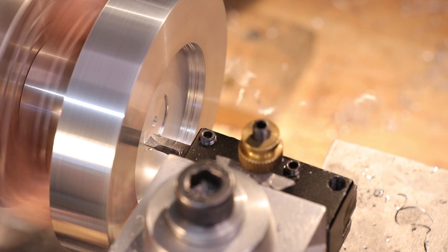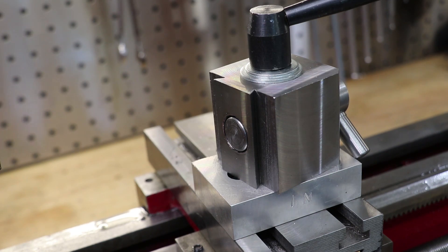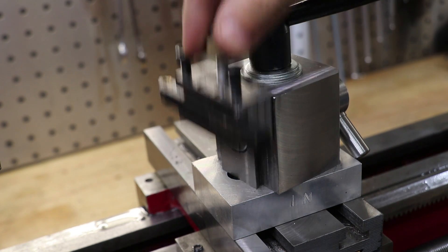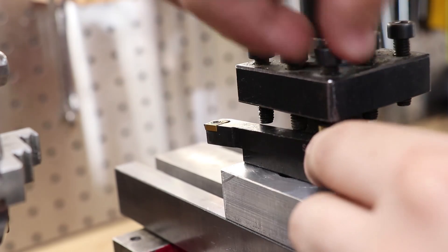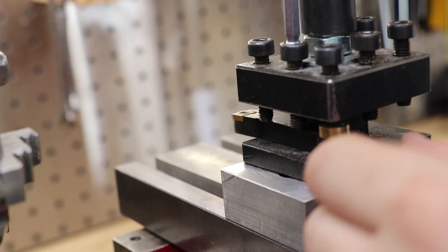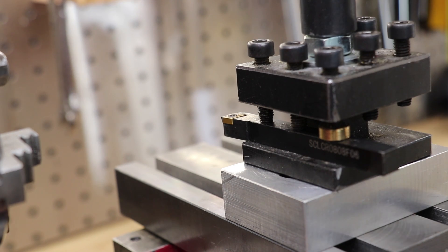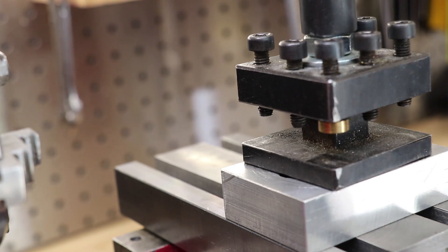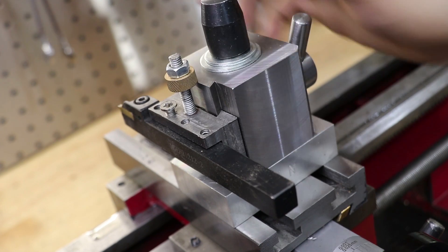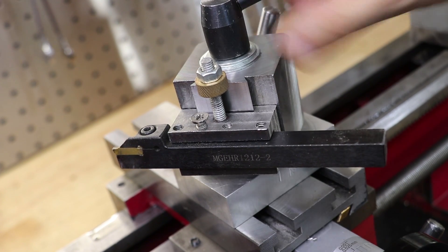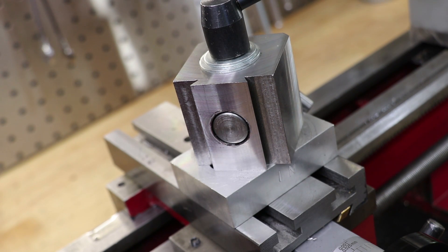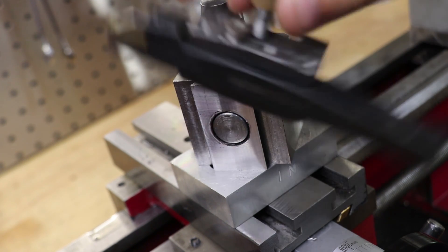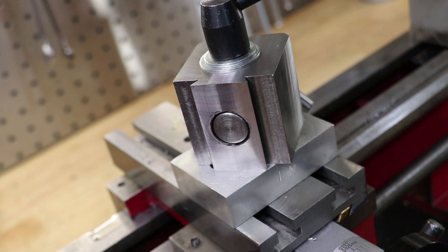Now the next big upgrade that everyone tends to get is a quick change toolpost. I got mine because it got really tedious, swapping the tools in and out using the four-way toolpost, which is a really slow process. Plus, I bought a set of 12mm tall tools, and the only way to use them would be using a quick change toolpost. And really, once you use one, there really is no going back. Just the ability to swap in and out tools very quickly is a big time saver.